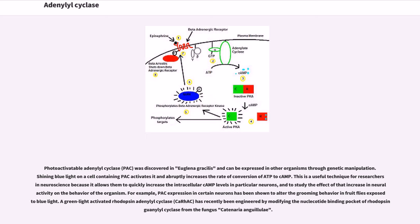A green light activated rhodopsin adenylyl cyclase (bPGC) has recently been engineered by modifying the nucleotide binding pocket of rhodopsin guanylyl cyclase from the fungus Catenaria anguillulae.